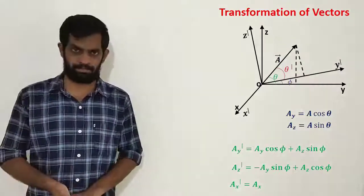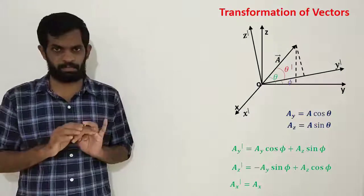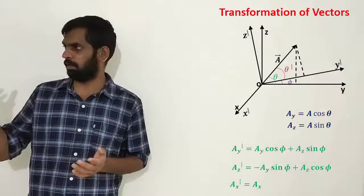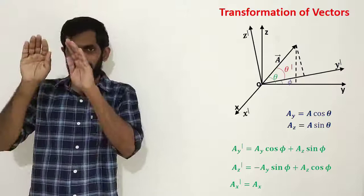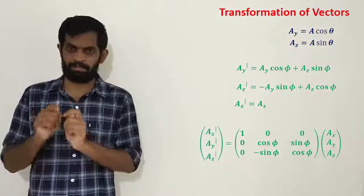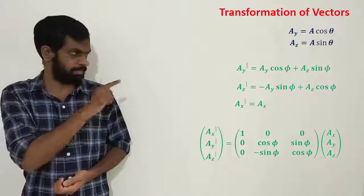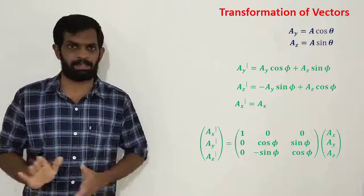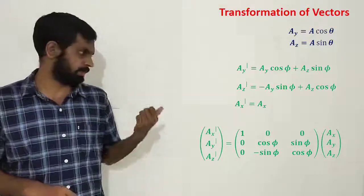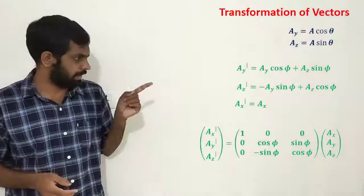Using these equations, x-dash equals x, ay-dash and az-dash can be written in matrix form. The transformation matrix for rotation about the x-axis by angle phi is: [1, 0, 0; 0, cos(phi), sin(phi); 0, minus sin(phi), cos(phi)] applied to the column vector [x, ay, az].